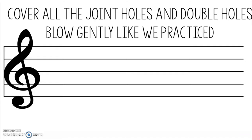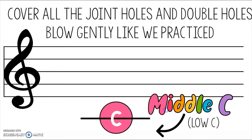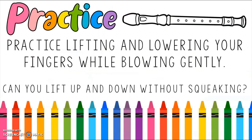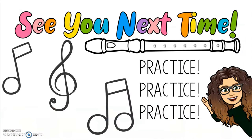Now cover all the finger holes and the two sets of double holes and blow gently into the recorder with the right posture and breath like we practiced. We call this sound middle C, or low C — from here on out, low C. For this week's practice, lift and lower your fingers while blowing gently. Can you lift all your fingers up and down without squeaking? That's your goal. I hope you enjoyed our very first remote lesson — see you next time. Practice, practice, practice!